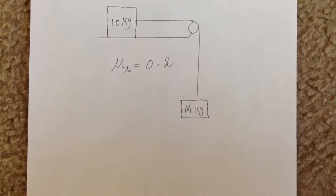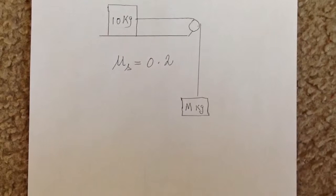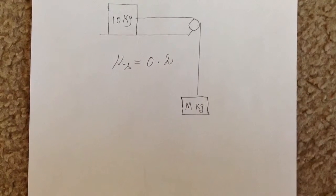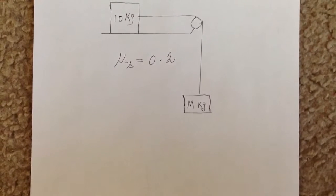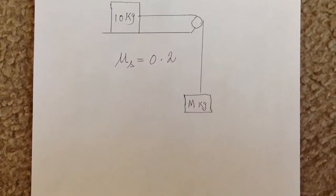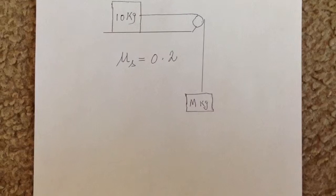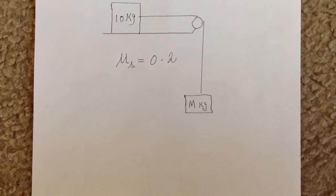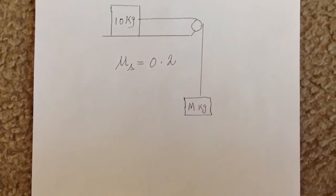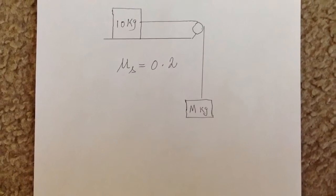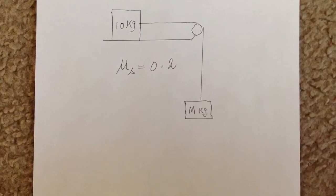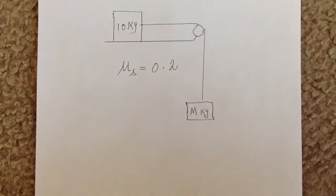Two blocks of masses 10 kg and m kg are arranged as shown in the figure. The coefficient of static friction is 0.2. The system is in equilibrium. What is the maximum mass of m?